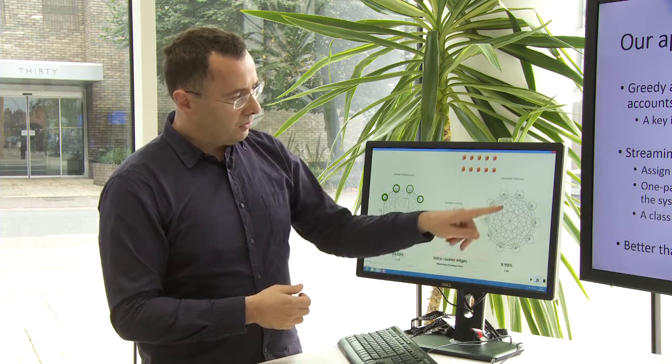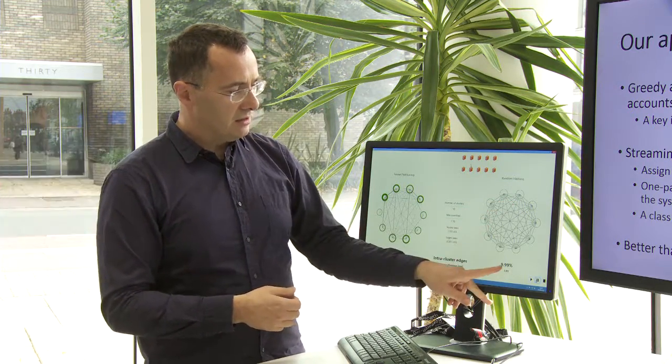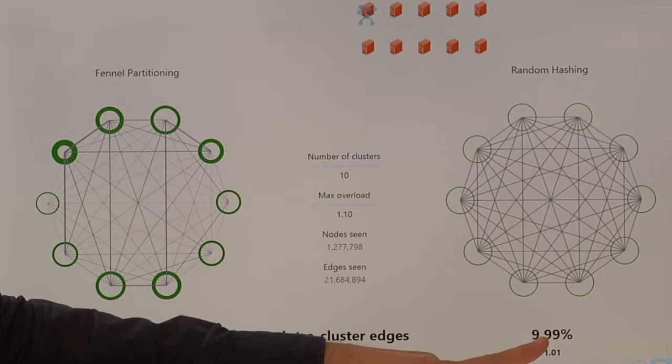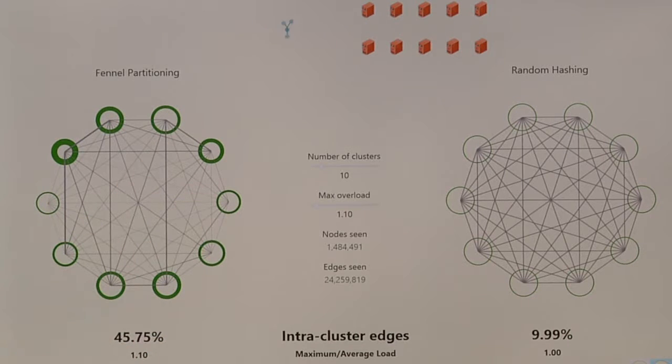This is what one would expect if you do random assignments, because pretty much you have an even or equal number of nodes being assigned to each of them. On the other hand, if you look at the fraction of interior edges, we see that just maybe 10% of them happen to be interior ones. This is a very low percentage overall.